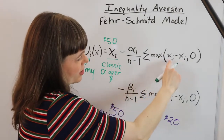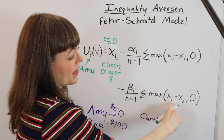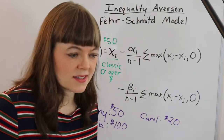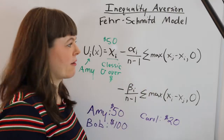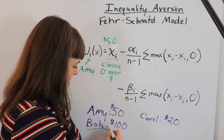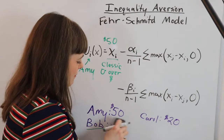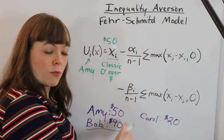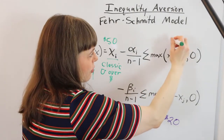We have a situation where somebody gets more than Amy, and we need to keep this separate from situations where Amy has more than somebody else, because we want to allow for the possibility that people are way more sensitive when they have less than somebody than when they have more than somebody — and this structure is going to allow for that. The only person in this triad who has more than Amy is Bob. Actually, let me adjust these numbers to avoid confusion — I'm going to say Bob has ninety. So Bob has forty more than Amy, which means Bob's amount minus Amy's amount is forty.